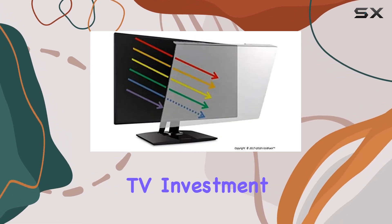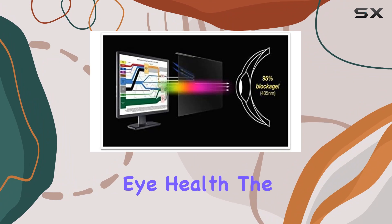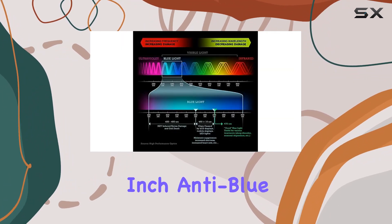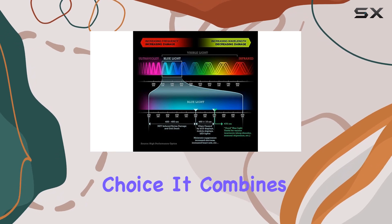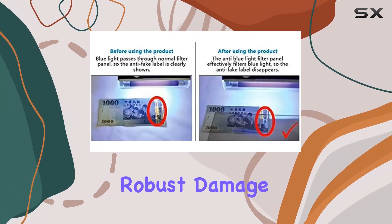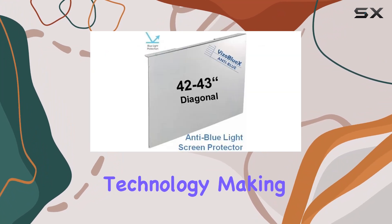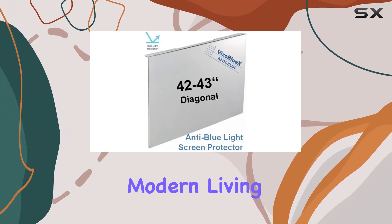If you're looking to protect your TV investment and prioritize your family's eye health, the Viso Blue X 42 to 43 inch anti-blue light TV screen protector is a compelling choice. It combines robust damage protection with advanced blue light filtering technology, making it a must-have accessory for modern living rooms.